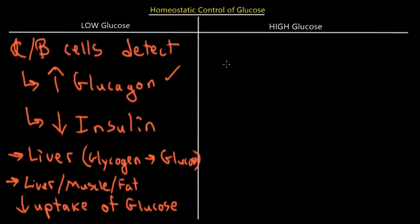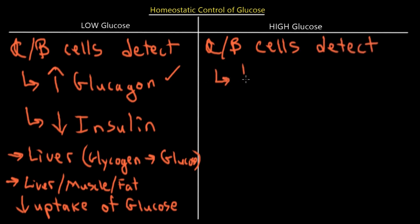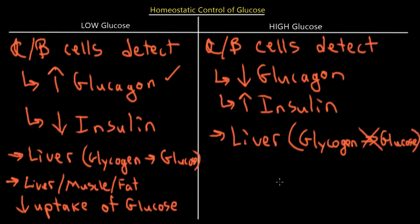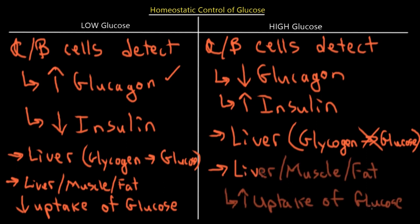If we're talking about high concentration of glucose — for example, after eating a meal or something sweet — we'll naturally have elevated glucose. The alpha and beta cells detect this and react by decreasing the secretion of glucagon and increasing the secretion of insulin. The liver cells respond by slowing or stopping the conversion of glycogen to glucose, and the liver, muscle, and fat tissue all increase their uptake of glucose due to the action of insulin.